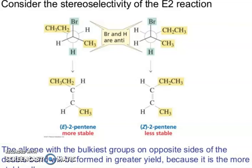Consider the stereochemistry of eliminations. You see, E-2-pentene, which is really more stable, and Z-2-pentene, which is less stable. So, Br and H are eliminated, and after elimination they give 2 products: one E and one Z. The alkene with the bulkiest groups on opposite sides of the double bond will be formed in greater yield, because it is the more stable alkene.